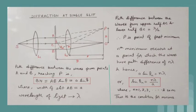The path difference between the waves from B and C is also lambda by 2, and therefore destructive interference occurs due to waves from the upper half AC and lower half BC, as every point in AC has a corresponding point in BC for which the path difference is lambda by 2.